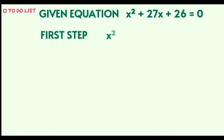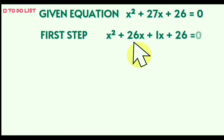...x squared plus 26x plus 1x plus 26 is equal to 0. An important tip is to always write the greater number first and then the smaller number.